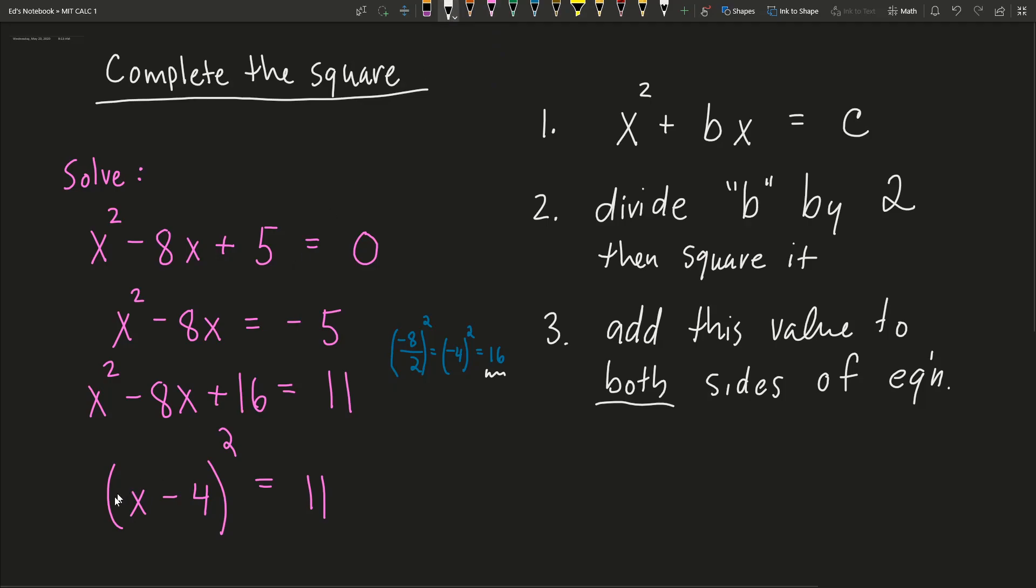The next step, now we're almost done, is we take the square root of both sides. So you get x - 4 is equal to... when you take the square root of something, you must do plus or minus square root of 11. And this we can't simplify anymore. So my final answer is going to be x = 4 ± √11.